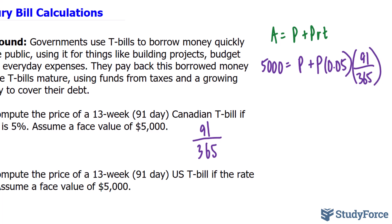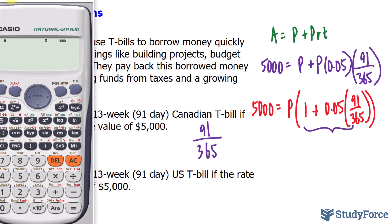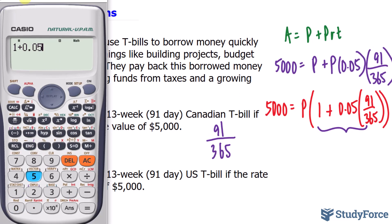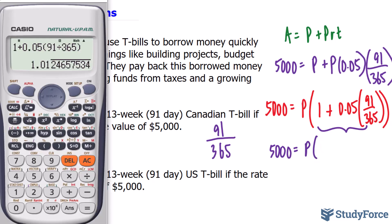Now all we have to do is isolate for the variable P. We can do that by common factoring the P, giving us: 5,000 = P × (1 + 0.05 × 91/365). We can evaluate the expression in parentheses using our calculator — it equals approximately 1.01246.